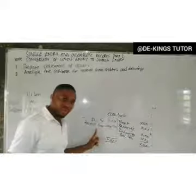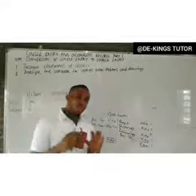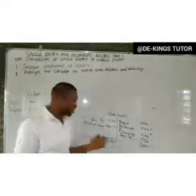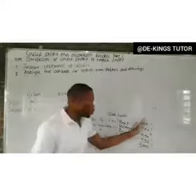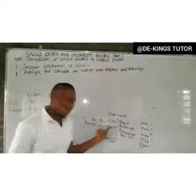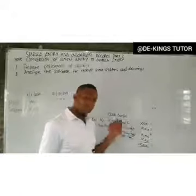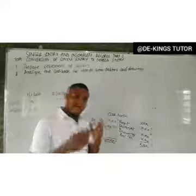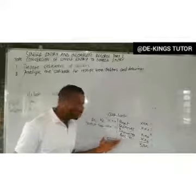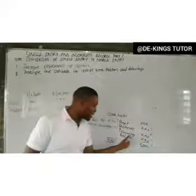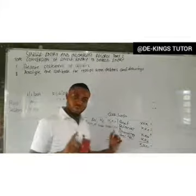If receipts from debtors are not in the given cash book, you must find it. The examiner may remove it. You prepare the cash book with additional statements given; the balancing figure will then give you receipts from debtors. Similarly, if drawings are missing, you add up the debit side and credit side of the cash book and the balancing figure will give you the drawings. The cash book should reveal both receipts from debtors and drawings.